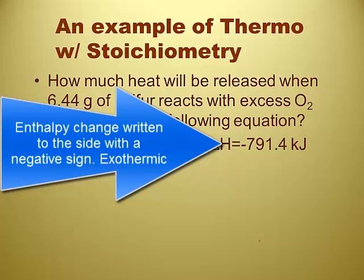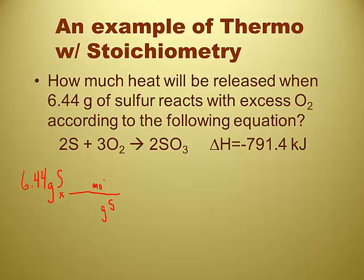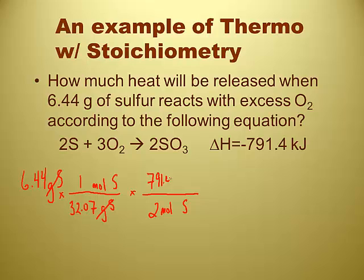So we're going to do an example of thermochemical stoichiometry. How much heat will be released? We want to know how much energy is released — it is an exothermic reaction. It says 6.44 grams, not moles. We were just doing moles to mass and mass to moles. Can you put an identity in there? Grams of sulfur. We need to go from grams of sulfur to moles of sulfur. One mole is 32.07 — the molar mass of sulfur. So we've just converted from mass to moles. Grams are canceled, moles are still here. Now that I'm in moles of sulfur, I can see that two moles of sulfur make 791.4 kilojoules.